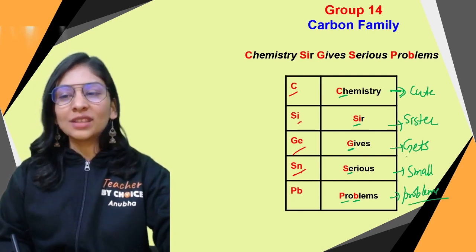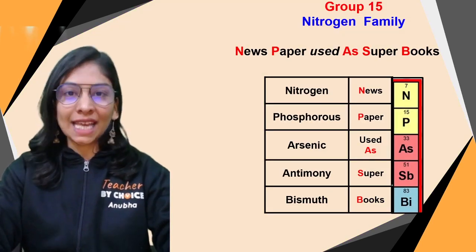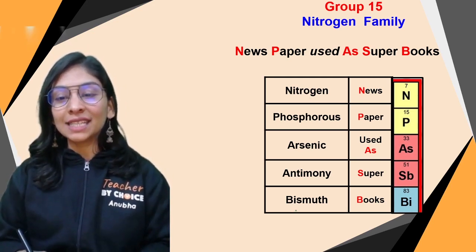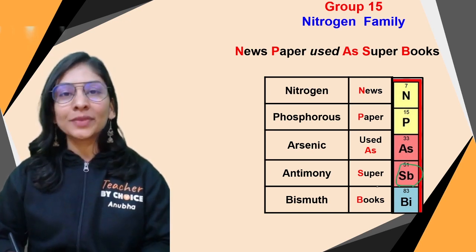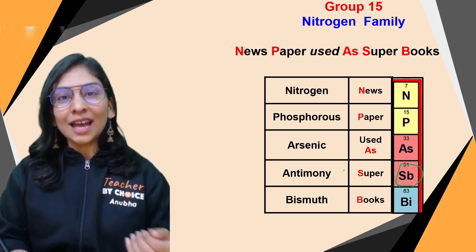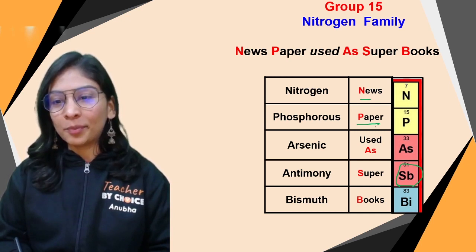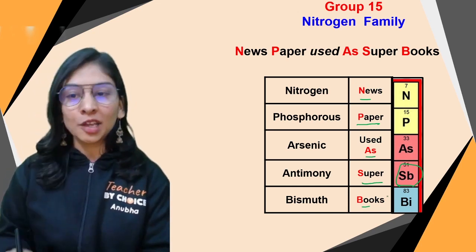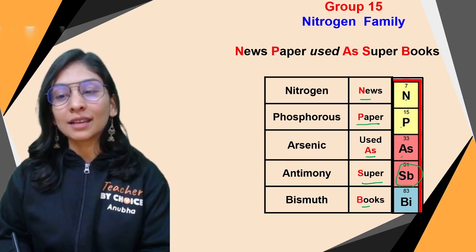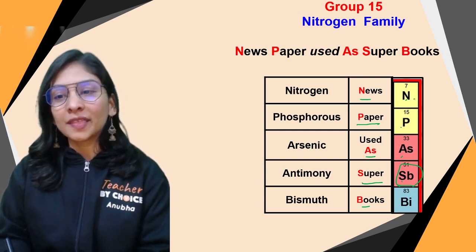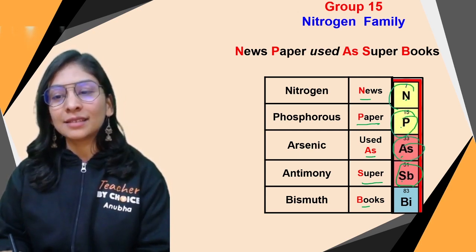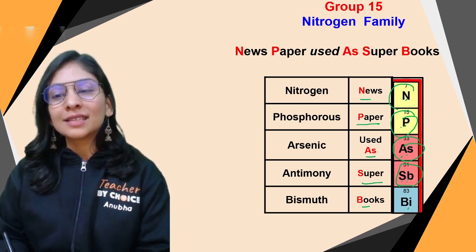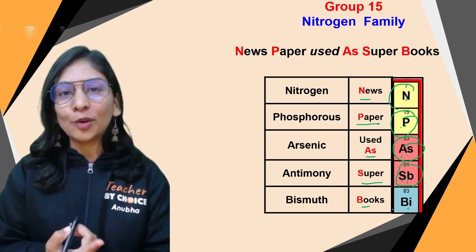Group 15 — the nitrogen family — members are Nitrogen, Phosphorus, Arsenic, Antimony (Sb/Stibium), and Bismuth. Remember: 'Newspaper Used As Super Books' — N, P, As, Sb, Bi — or 'New Police Officer Assigns Sub-Inspector Bikram Singh' — N, P, As, Sb, Bi. You can download the file for reference.